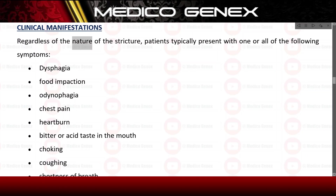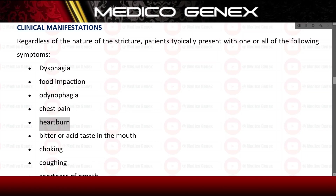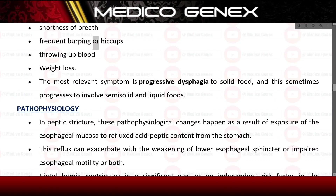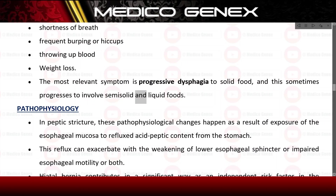Regardless of the nature of the stricture, patients typically present with one or all of the following symptoms: dysphagia, food impaction, odynophagia, chest pain, heartburn, bitter or acid taste in the mouth, choking, coughing, shortness of breath, frequent burping or hiccups, throwing up blood, and weight loss. The most relevant symptom is progressive dysphagia to solid food, which sometimes progresses to involve semi-solid and liquid foods.